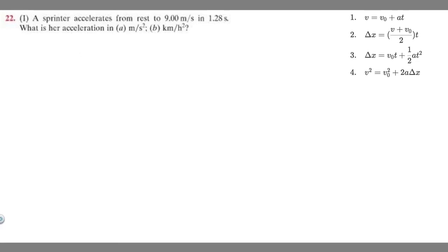In this problem, we're told that a sprinter accelerates from rest to 9 meters per second in 1.28 seconds. What is her acceleration in A, meters per second squared, and B, kilometers per hour squared?